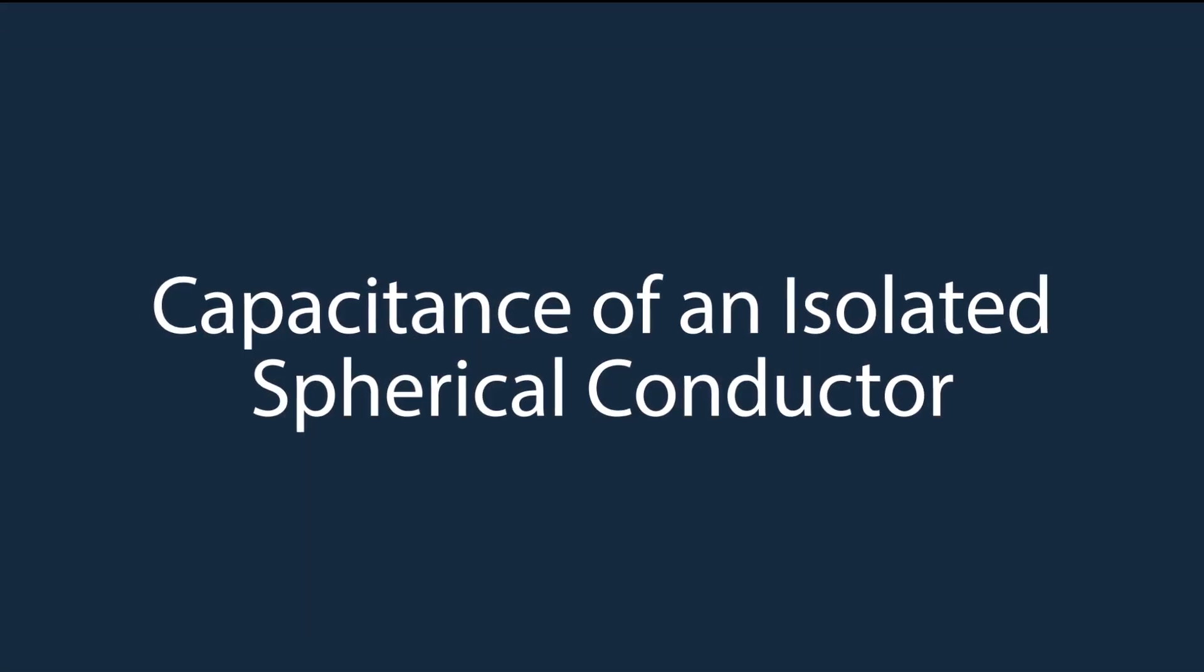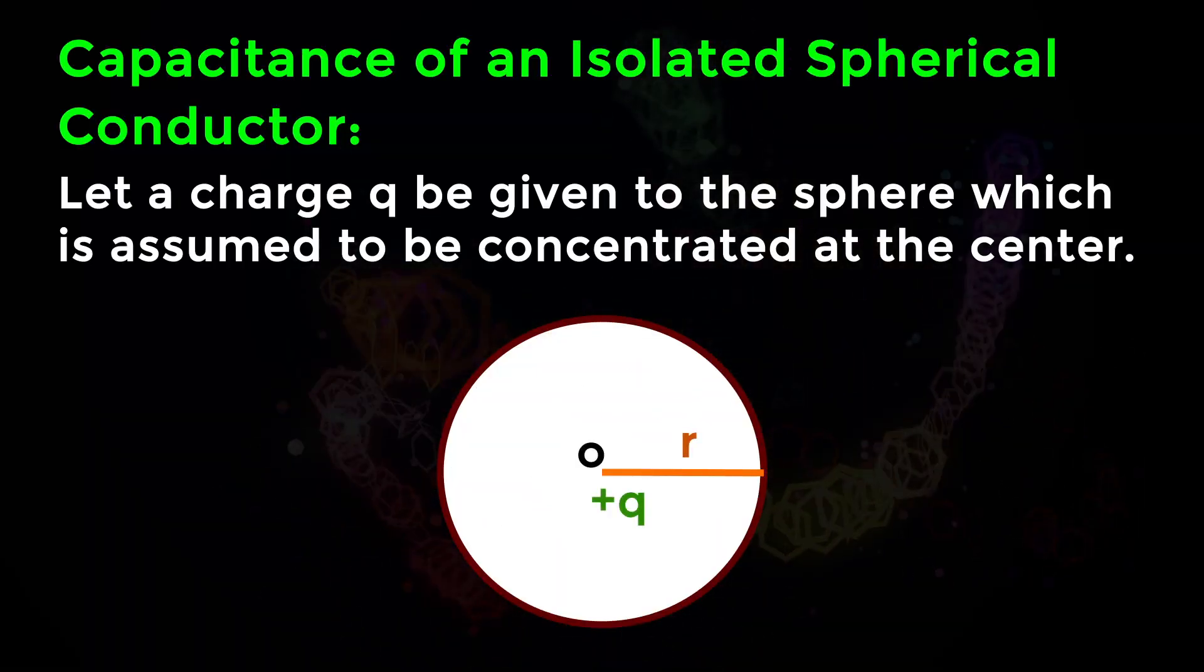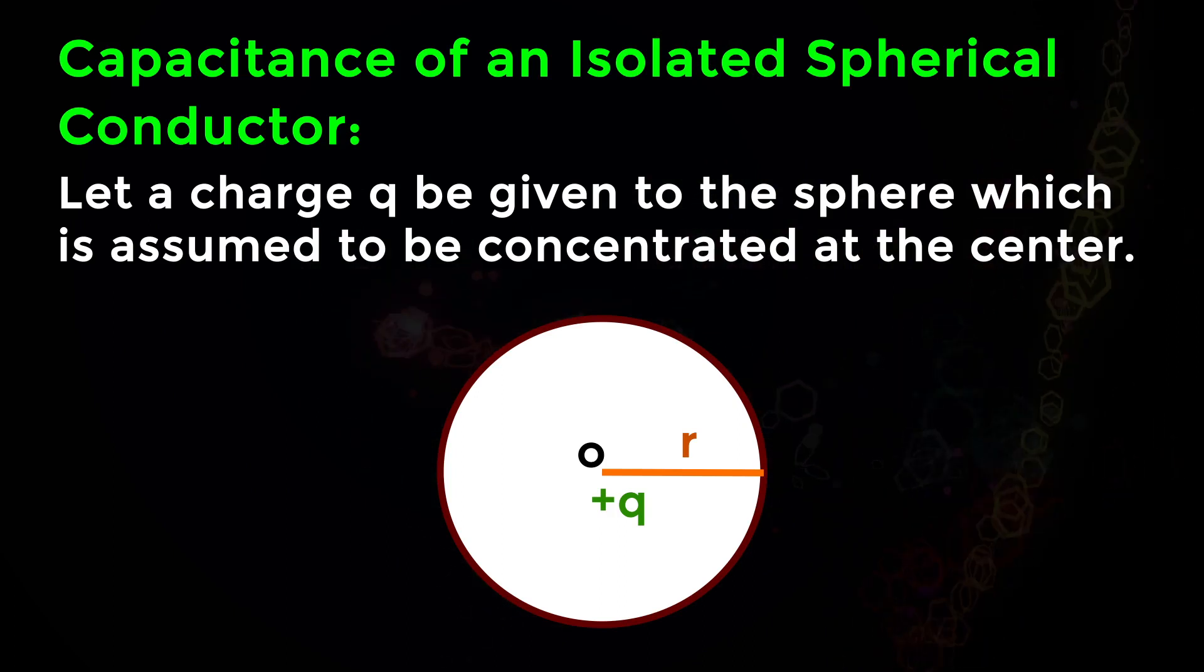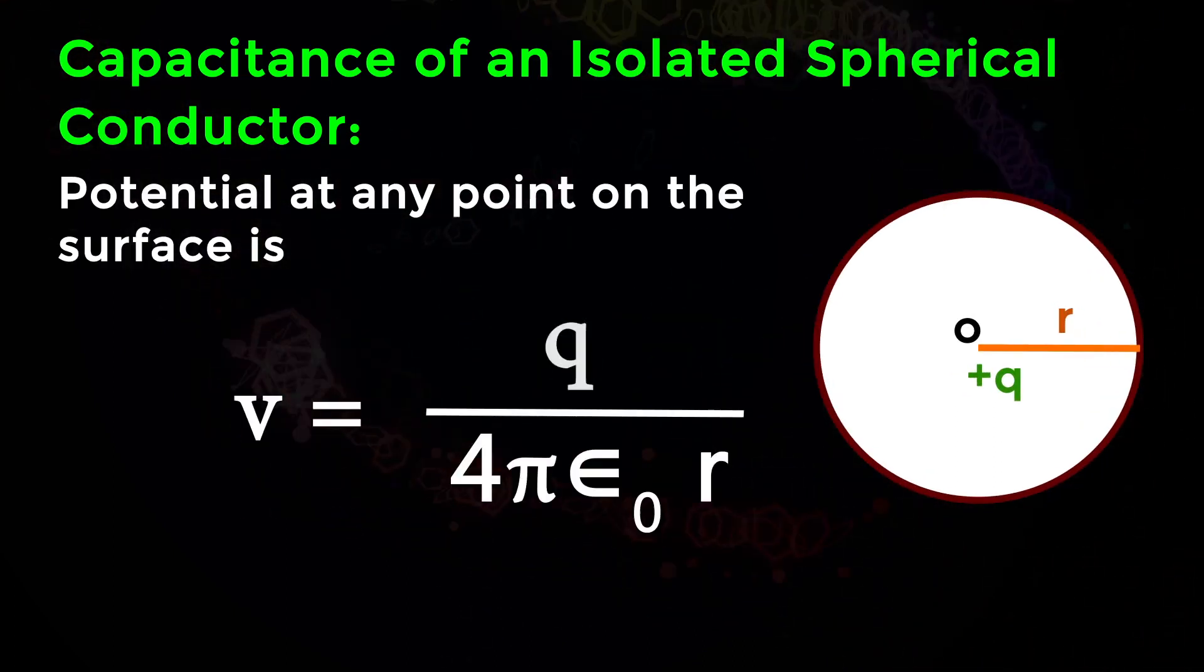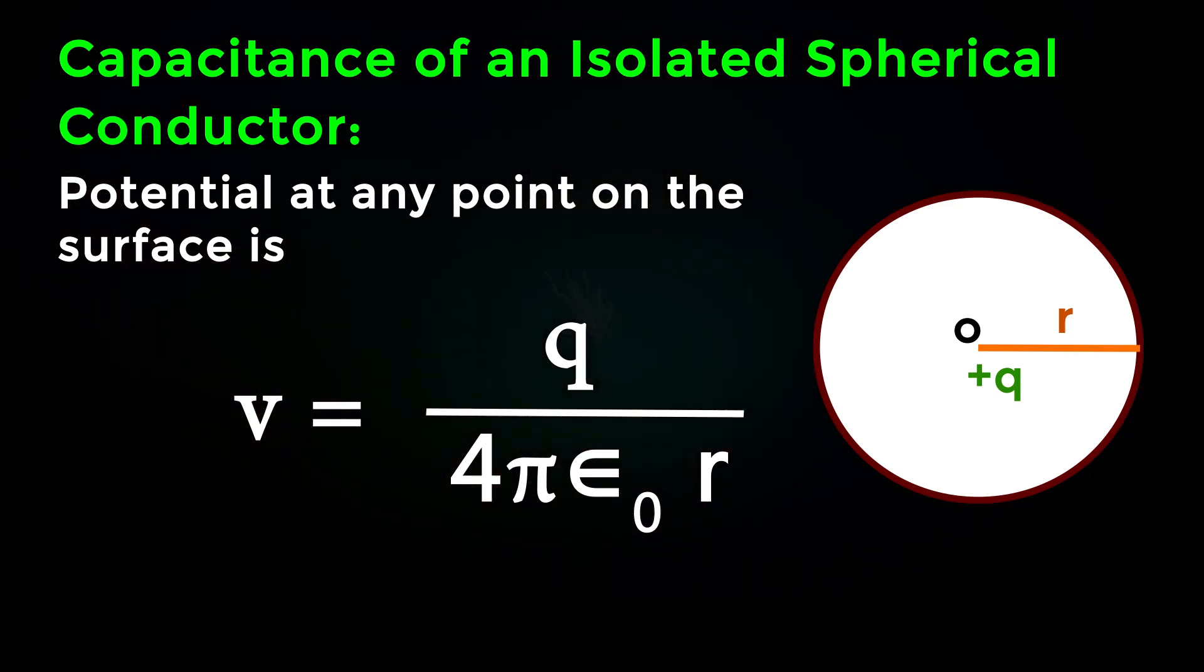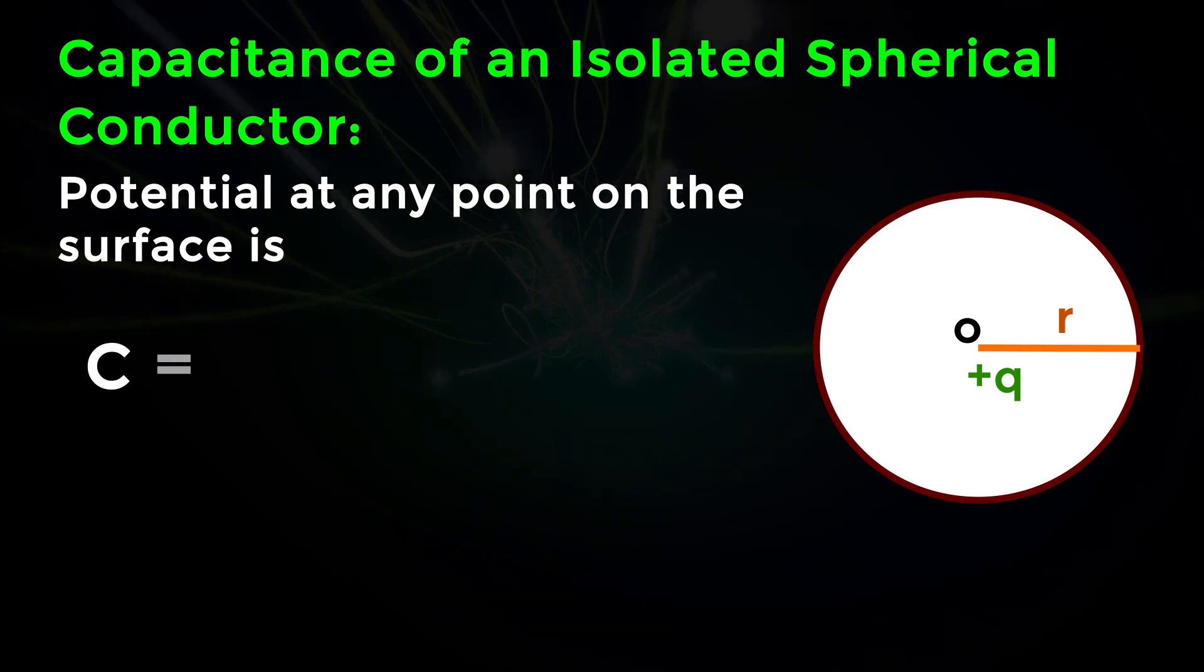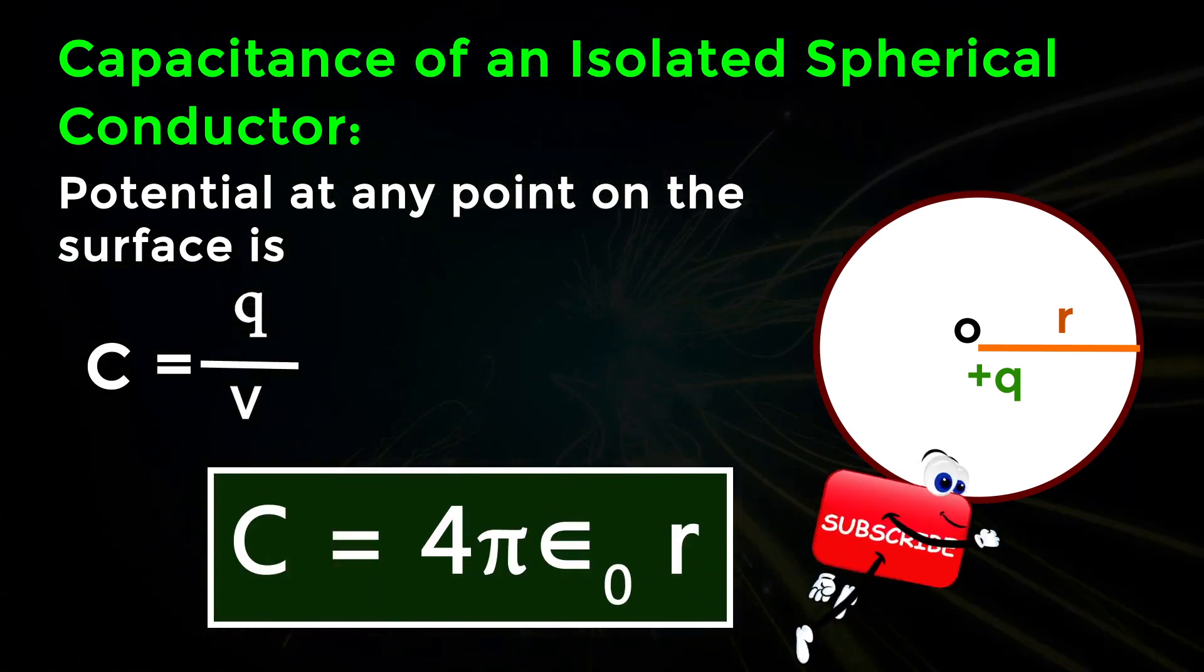Capacitance of an isolated spherical conductor. Let a charge Q be given to the sphere which is assumed to be concentrated at the center. Potential at any point on the surface is V equals Q by 4πε₀R. C equals Q by V, C equals 4πε₀R.